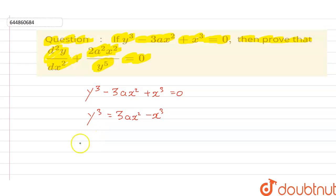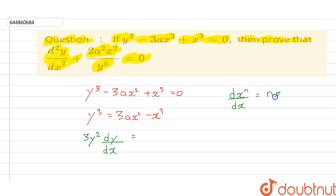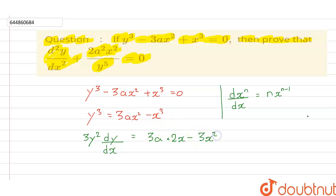Now differentiate this whole function with respect to x. On the left-hand side we get 3y² dy/dx. We have the formula: d(xⁿ)/dx is equal to n times x to the power n minus 1. So 3a is a constant, taken outside the differentiation, and the differentiation of x² is 2x, then minus 3x² according to the formula.